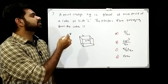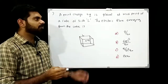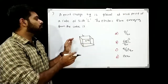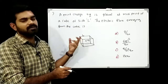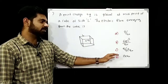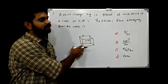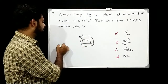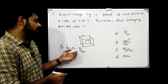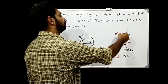A point charge +Q is placed at the midpoint of a cube of side l. The electric flux emerging from the cube is: option A: Q/ε₀, option B: 6Ql²/ε₀, option C: Q/(6l²ε₀), option D: 0. By Gauss's law, flux = closed integral E·dS = Q/ε₀, independent of the shape. So the answer is option A: Q/ε₀.